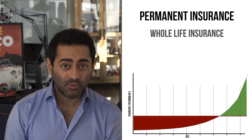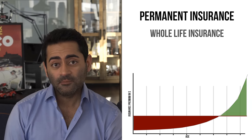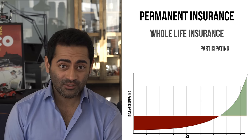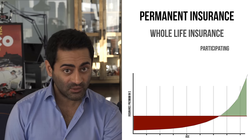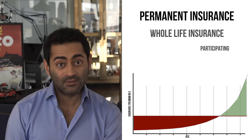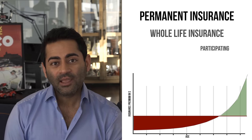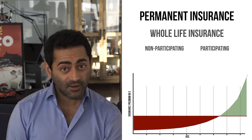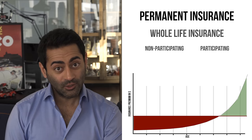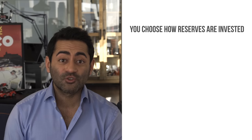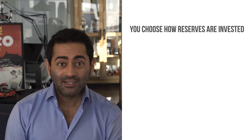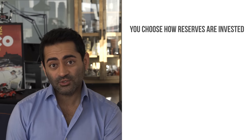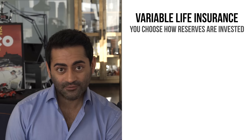Whole life is a type of permanent insurance that fits this bill. With participating whole life, you get to participate in the profits of the insurance company, who may give you dividends or bonuses every year if the reserves grow faster than predicted. With non-participating whole life, you do not participate in the insurance company's profits, but your initial premiums start out lower. If you want more control over how the reserves are invested, you have the ability to pick the investments with certain policies — in the United States and other countries, they are called variable life insurance policies.